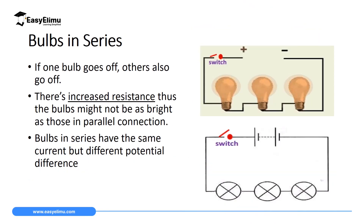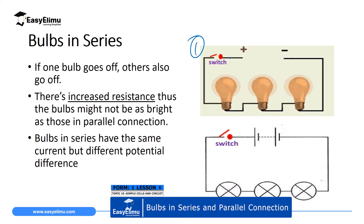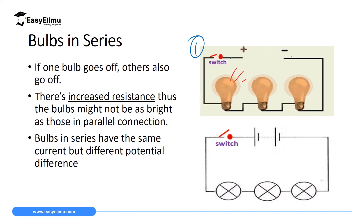Now we have bulbs in series arrangement. If one bulb in a series arrangement goes off, then it means all bulbs will go off because these bulbs share a common switch. If you switch this switch on, then all three bulbs will go on. But what you should know here is that the first bulb will be more bright, then the second one will be less bright, and then the third one will light with a very low brightness — because as you move from bulb one, it will consume some energy, then less energy will go to bulb two, and then bulb three will receive the least energy.